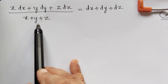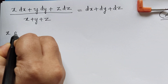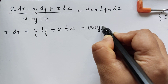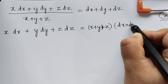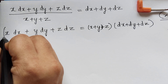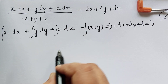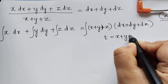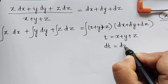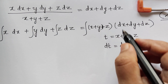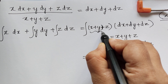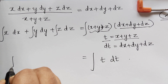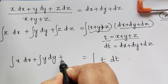After cancellation, we are left with: x dx plus y dy plus z dz equals (x plus y plus z)(dx plus dy plus dz). We integrate both sides. On the right, we substitute t equals x plus y plus z, so dt equals dx plus dy plus dz, giving the right side as the integral of t dt.